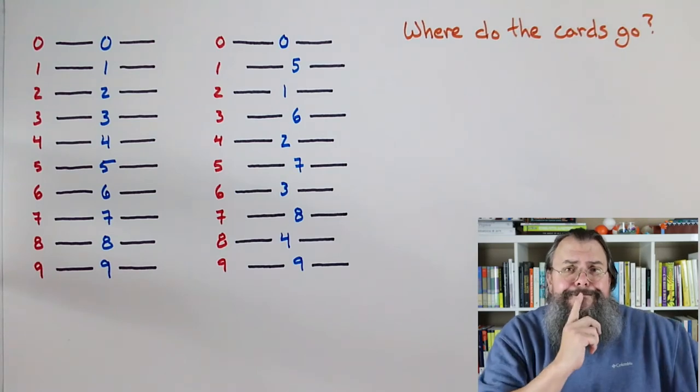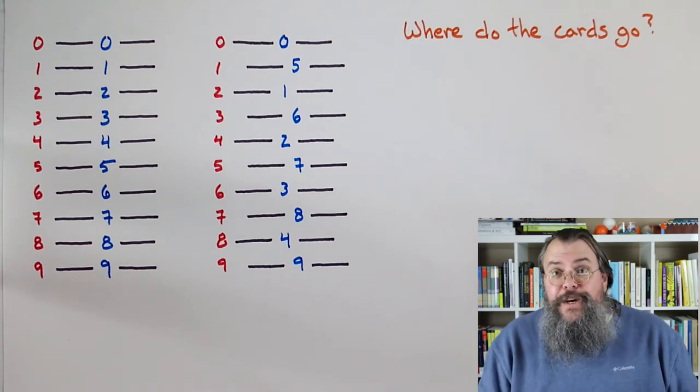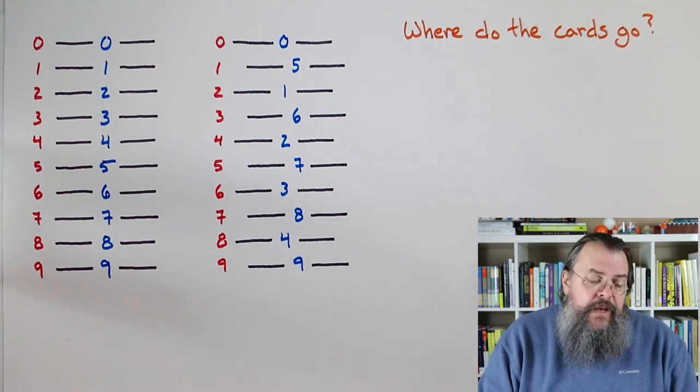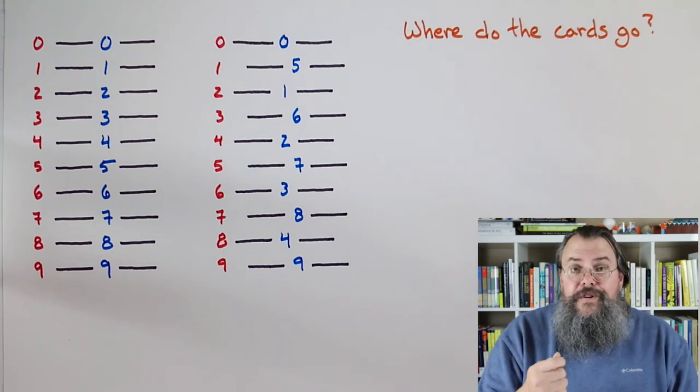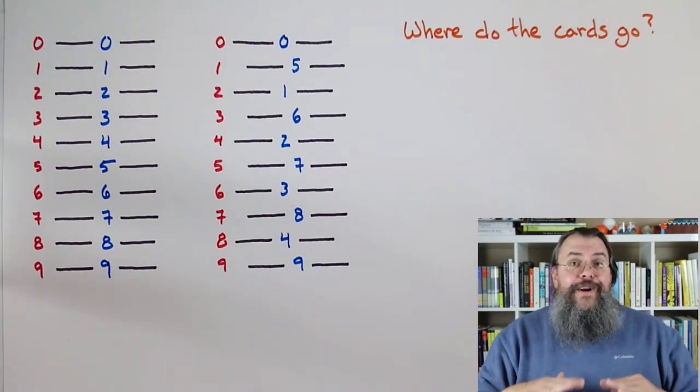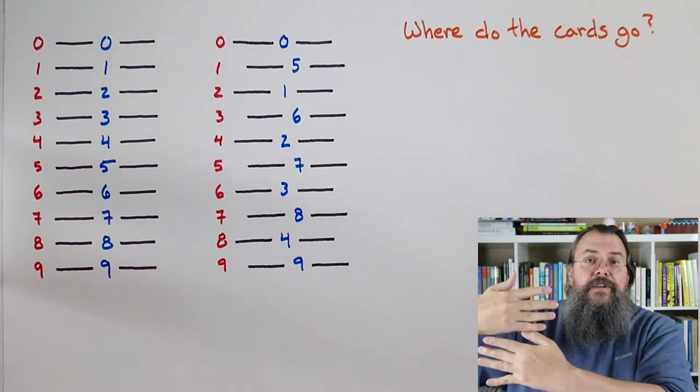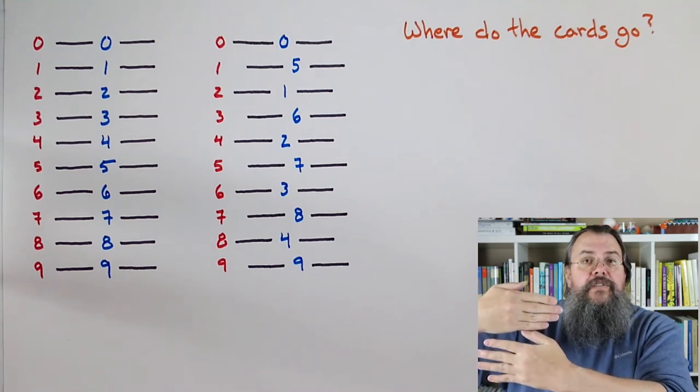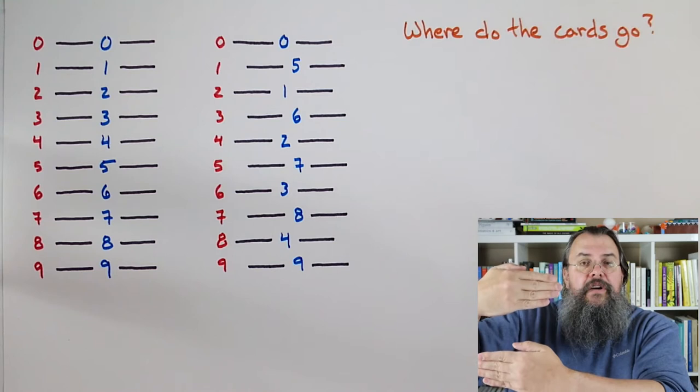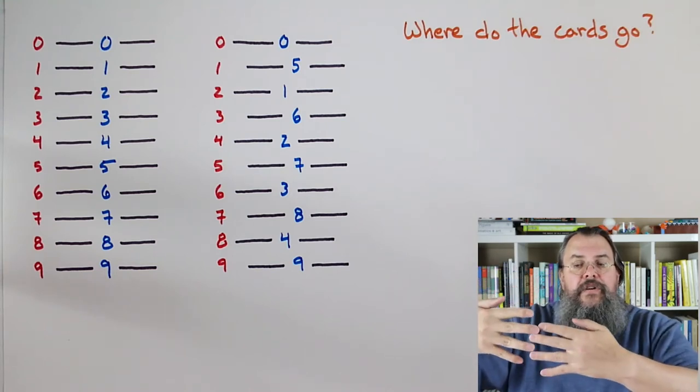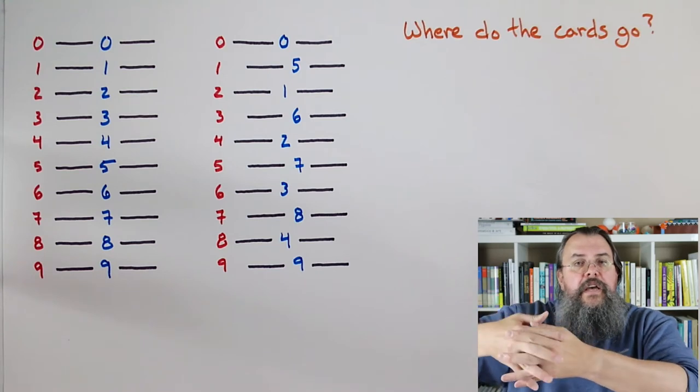So when we look, we say aha, we're back exactly where we started. We got our spades, diamonds, clubs, hearts, exactly the same order. Amazing. Now a lot of questions start to come up. How did that happen? Why eight? Because we shuffled eight times. What's going on here? So we're going to focus on answering the question, how do we know it would take eight shuffles?